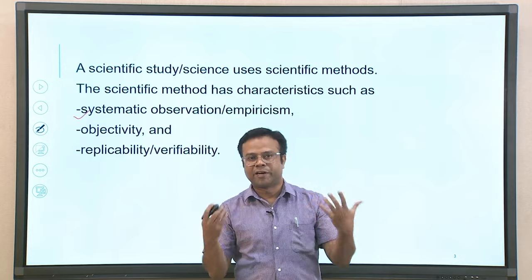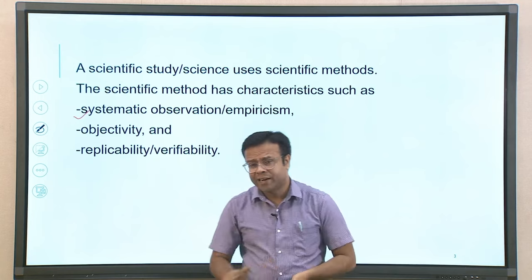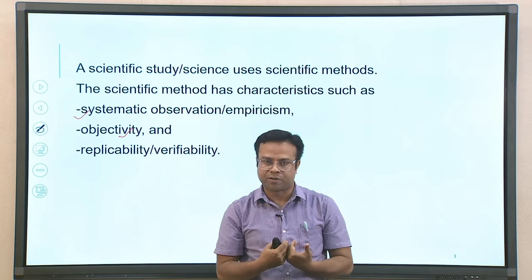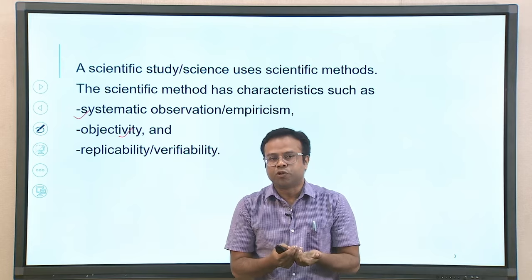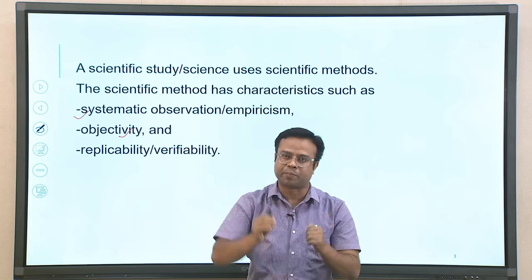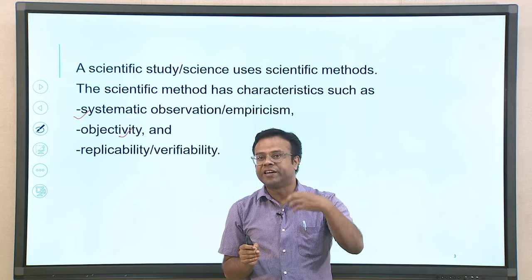Science says you need to do systematic observation — many instances of data collection at different time points — so that you can make a confident conclusion that this phenomenon is likely to happen. Systematic observation is also technically called empiricism or empirical study, where you collect data systematically and then make conclusions based on those observations. The second characteristic of scientific study is objectivity, which means not using your own subjective or individual biases in interpreting or collecting data.